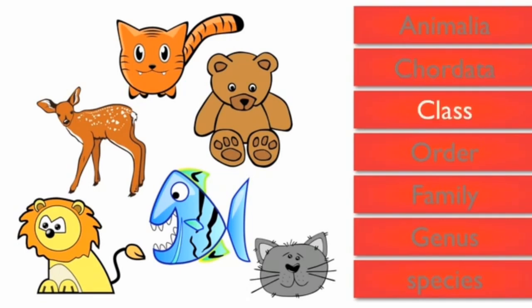The third level is class and the class of lion is mammalia. So the fish is eliminated because fish is not mammalia.